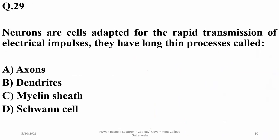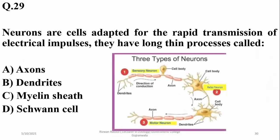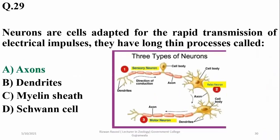Neurons are cells adapted for rapid transmission of electrical impulses. They have long thin processes. Due to their longer structure, these are referred to as axons. If referring to thin structures only, we prefer dendrites. Here, due to greater length, axons is the right option.